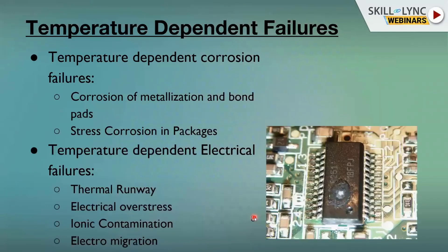The second failure type is temperature-dependent corrosion failures. At high temperature, moisture and ionic contamination evaporate and induce a slow process of corrosion. We also have stress corrosion in the package — as the name suggests, stress induces corrosion in the part. The third classification is temperature-dependent electrical failures.